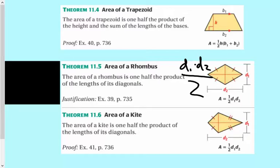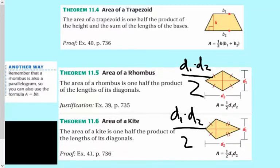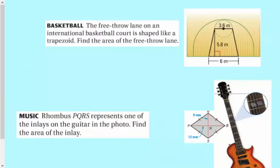And then same with kite, it's D1 times D2 divided by two. Now keep in mind that a rhombus is a parallelogram, so you can still use base times height if you have that information.